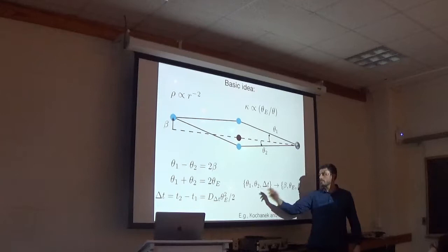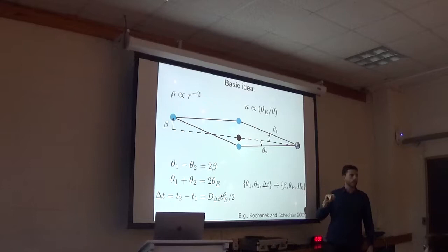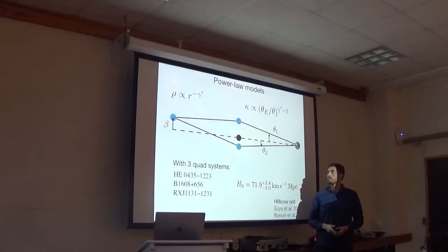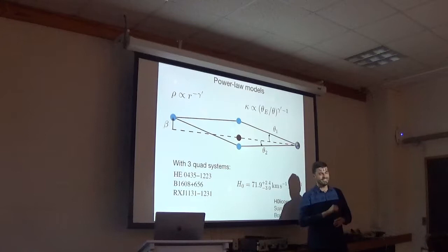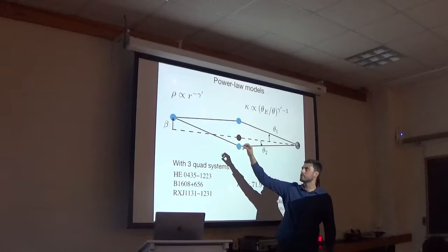And in this model, you can actually, from the two angles, measure the impact parameter and the Einstein angle, and then the time delay tells you a distance, this time delay distance which is related to H0. So therefore, measuring theta 1, theta 2, and time delay, you can actually obtain information about the lens and also H0. This is a very simple case, but in reality it's not that far.